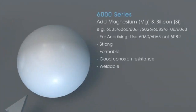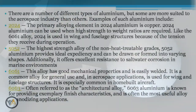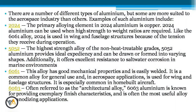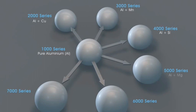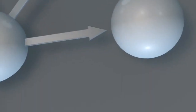In addition, 5052 offers excellent resistance to saltwater corrosion in marine environments. 6061 — this alloy has good mechanical properties and is easily welded. It is a common alloy for general use and in aerospace applications, used for wing and fuselage structures.